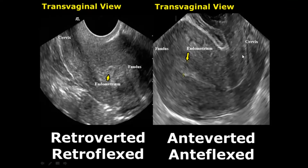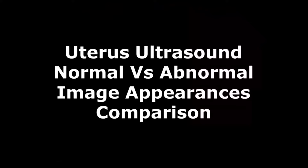Here we have the anteverted and anteflexed uterus. You can see that the fundus is on the left side of the image because it's bent facing anteriorly. The cervix is also facing upward, so it is anteverted. And the body is folded and facing anteriorly.